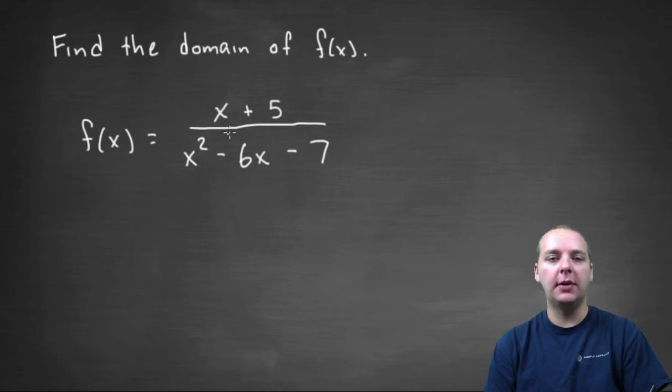Alright, let's see if we can find the domain of this rational function. We have x plus five divided by x squared minus six x minus seven.